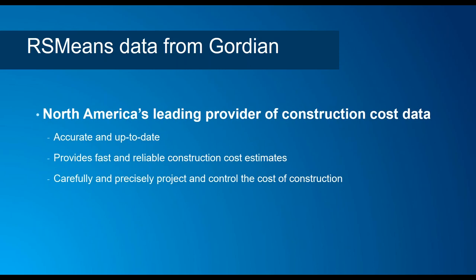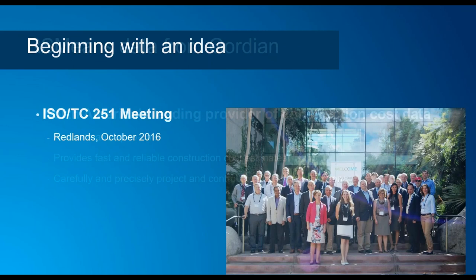What we're going to show you today is how this data is being made available inside GIS. This idea to bring RSMeans data into GIS started at the ISO Technical Committee 251 meeting hosted in Redlands in October 2016. ISO TC 251 is a technical committee for asset management systems, responsible for the development of the ISO 55,000 family of standards — covering asset management overview, requirements, and guidelines for implementing the management system.